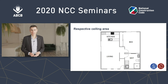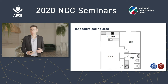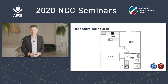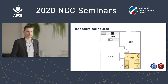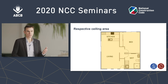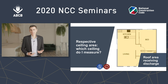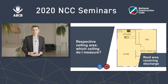So what is the respective ceiling area? Here's a hypothetical floor plan of a small residence with a kitchen, living, and bedroom — all naturally ventilated — and a wet room (bathroom and laundry combined) with an exhaust fan discharging into the ceiling space. The answer is that the respective ceiling area is the area of the entire ceiling served by the roof receiving the discharge. This is a measure of how well ventilated the roof space is, which is a function of the entire ceiling that roof covers — not just the area of the room being ventilated.